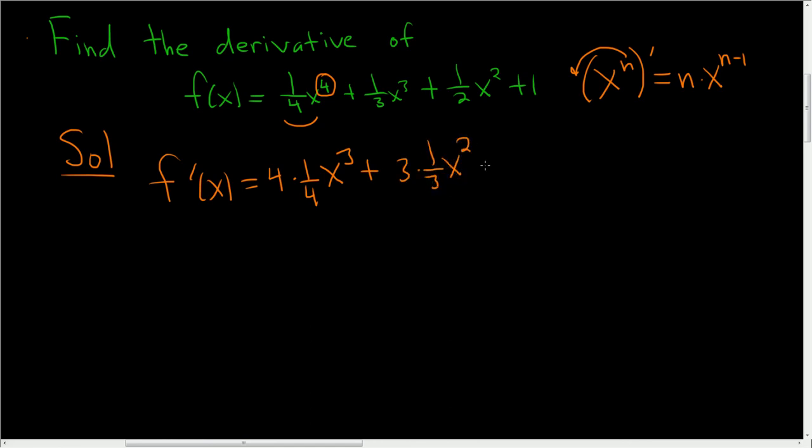x to the second power, right? 3 minus 1 is 2, plus 2 times 1 half, x to the first power. And then the derivative of 1 is 0.